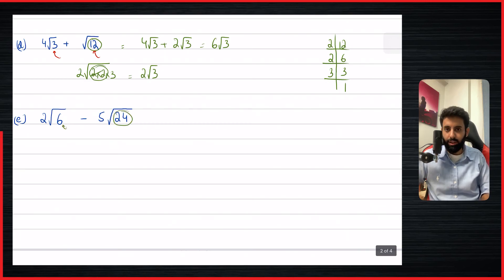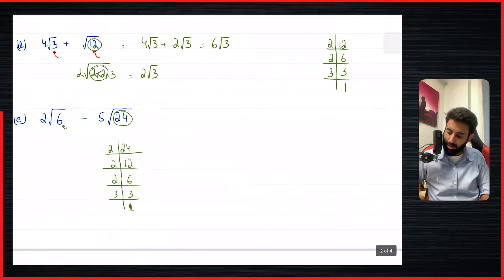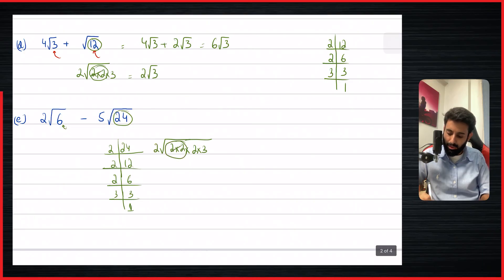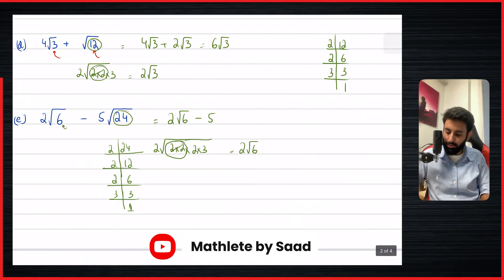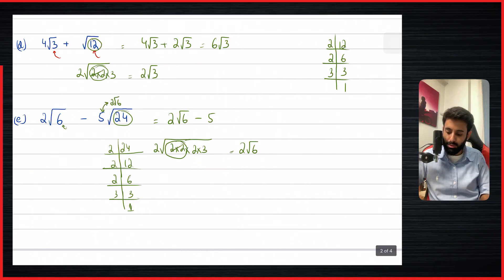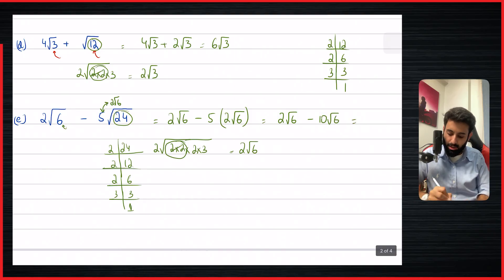Let's try the same here. Root six can't be simplified further because two times three — there's no pair. However, 24 can be: 24 divided by two is 12, divided by two is six, divided by two is three, divided by three is one. So 24 can be written as two times two times two times three. We'll bring a pair of two outside — we get two under root six. So root 24 becomes two under root six, but there's a five in front, so five times two becomes ten. So the expression becomes two under root six minus ten under root six, and two minus ten is minus eight under root six. That's your final answer.